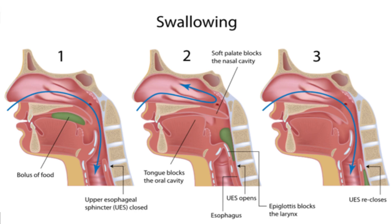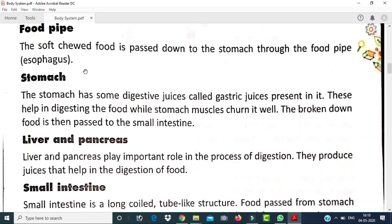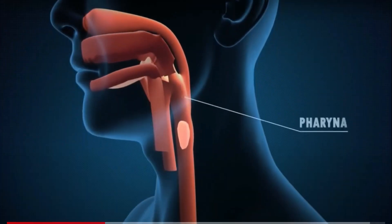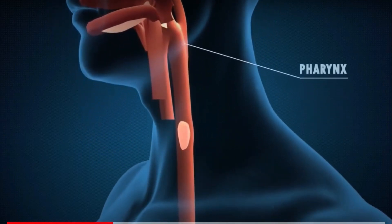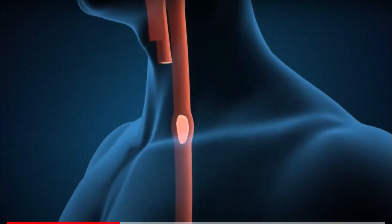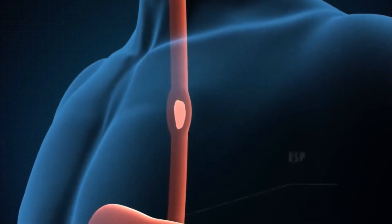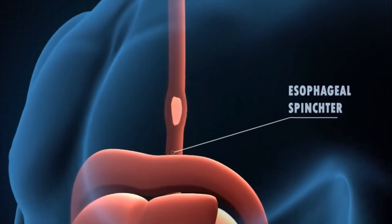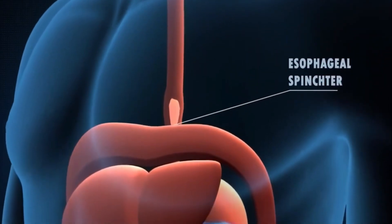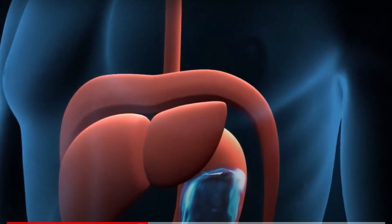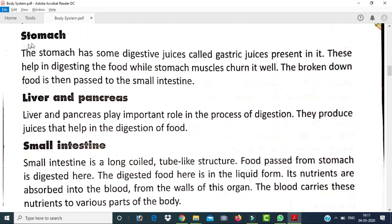After eating, the food passes from the mouth into the food pipe. The soft chewed food is passed down to the stomach through the food pipe, which is also called the esophagus.